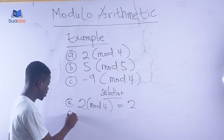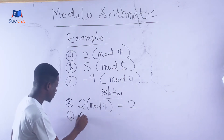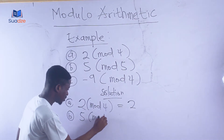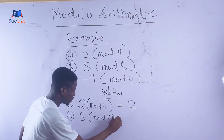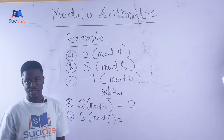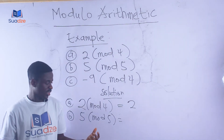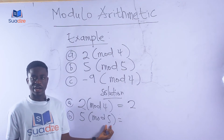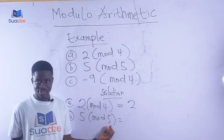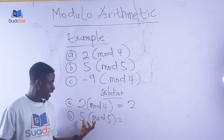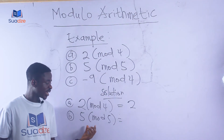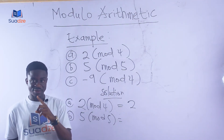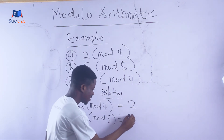Let's look at example B: 5 mod 5. Here the integer and the modulo number are the same. The rule is: anytime the integer and the modulo number are the same, the answer is zero. So 5 modulo 5 equals 0.